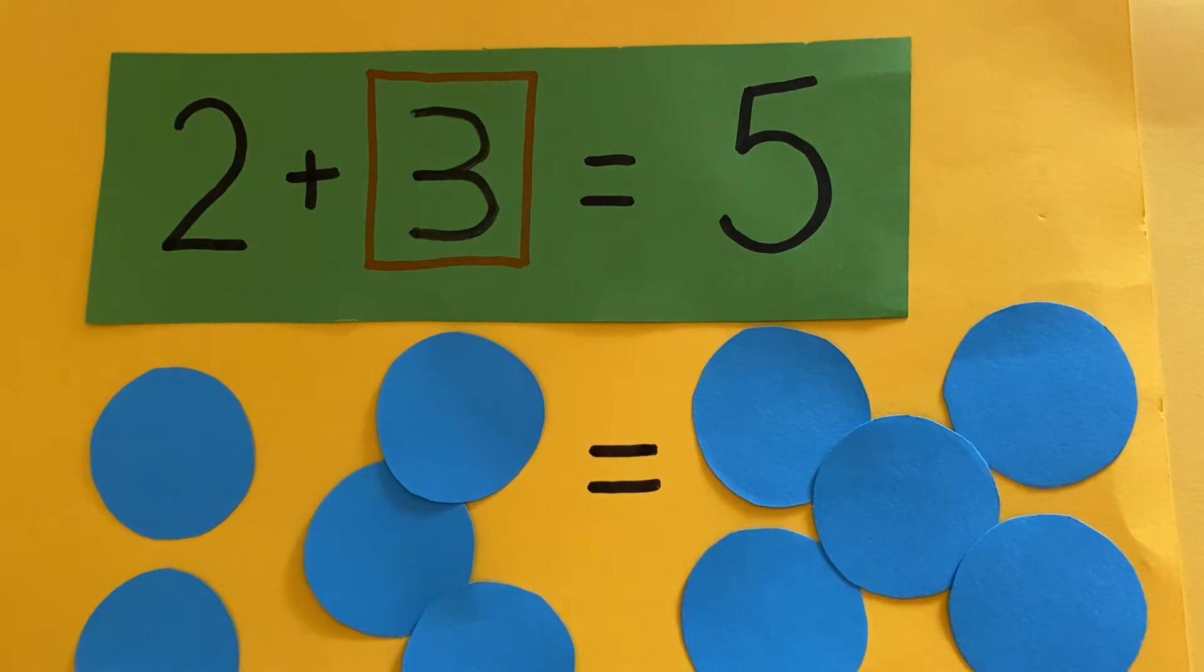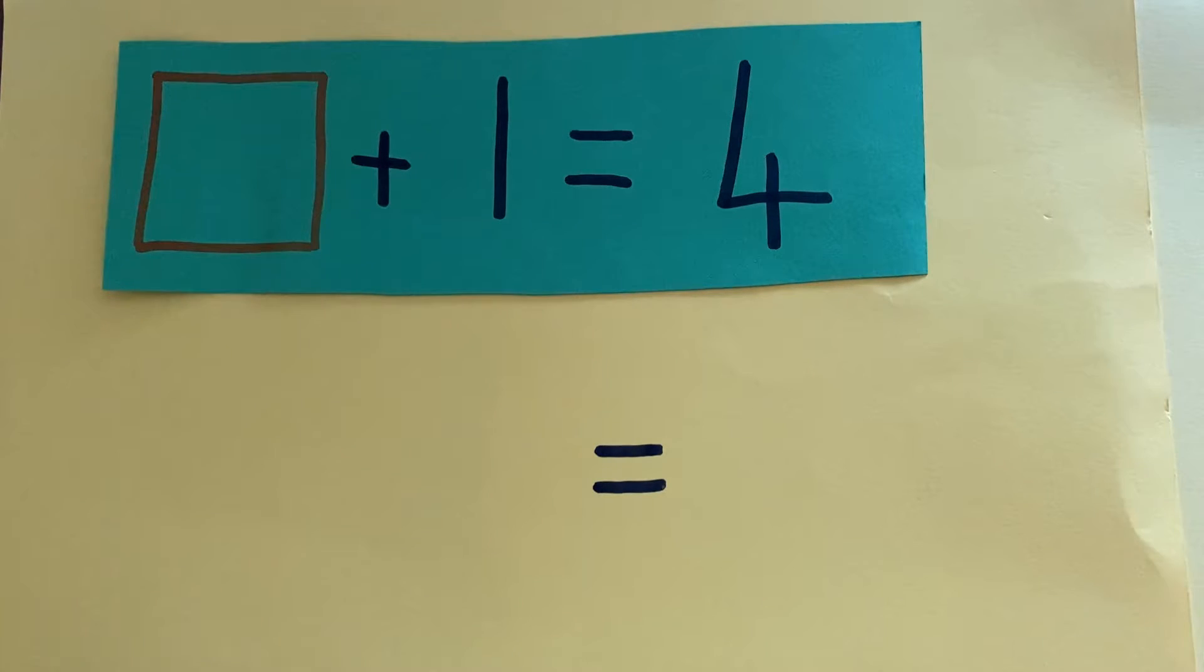Let's try a different one. This number sentence has a missing number to start with. I wonder if it will still work. Hang on. This side's got something. Add one. So I'm going to put one counter down that side.